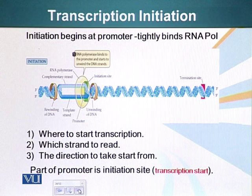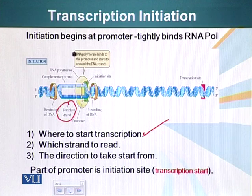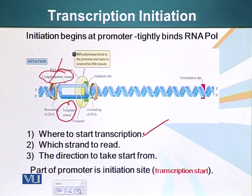The promoter tells specific information to RNA polymerase: where to start the transcription, where to start reading from, where to start manufacturing RNA from. It also tells RNA polymerase which DNA strand to read. DNA is a double helix with two strands — the template strand is used to make RNA, and the complementary strand, called the non-template strand, is not.